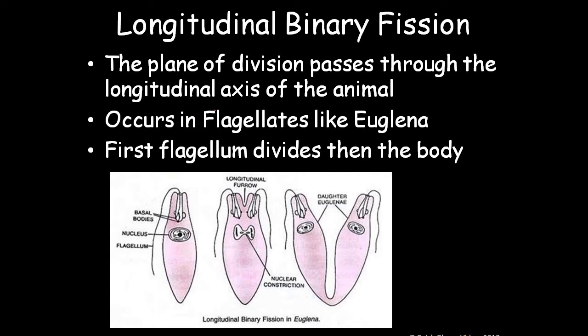Longitudinal binary fission: the plane of division passes through the longitudinal axis of the animal. It occurs in flagellates like Euglena. First the flagellum divides, then the body divides longitudinally, resulting in two daughter Euglenas.